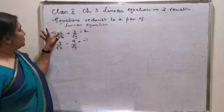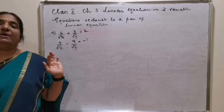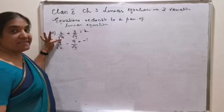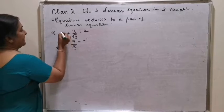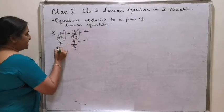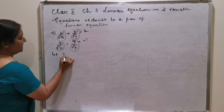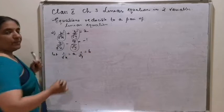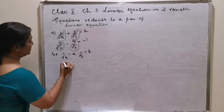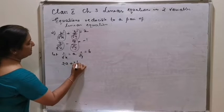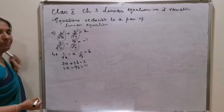This is question number 2: 2 by root x plus 3 by root y is equal to 2; 4 by root x minus 9 by root y is equal to minus 1. The variable x is in the denominator position, so we bring it to the numerator. The terms are 1 by root x and 1 by root y. Let 1 by root x equal a and 1 by root y equal b. The first equation becomes 2a plus 3b is equal to 2, and the second equation is 4a minus 9b is equal to minus 1.